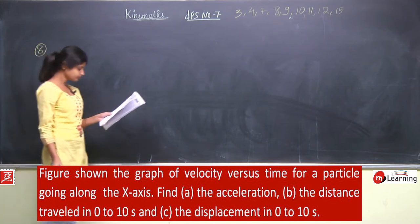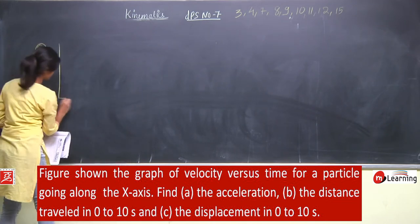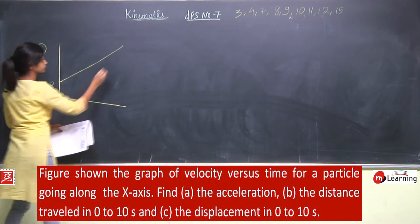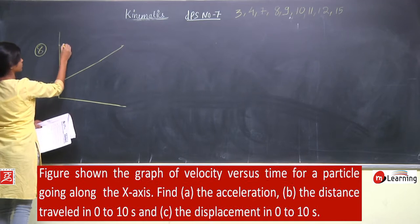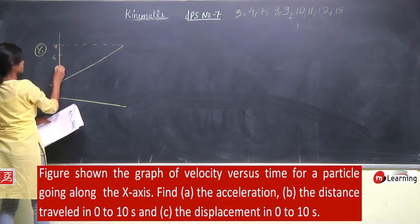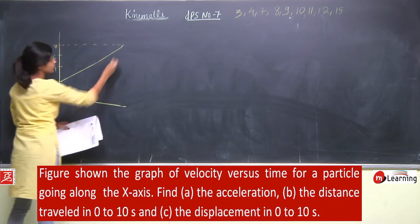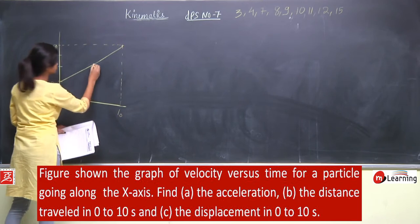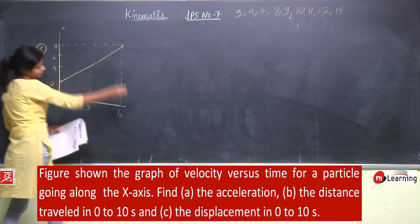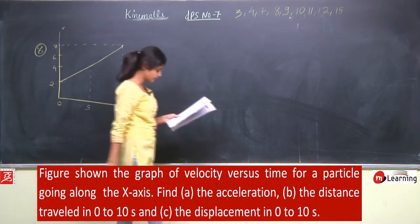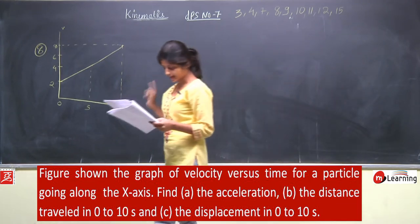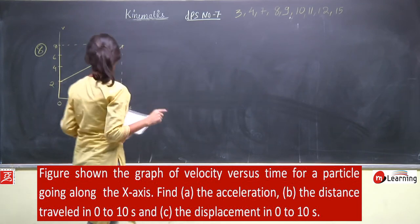Next is question number 8. This is a velocity versus time graph. The figure shows the graph of the velocity versus time for a particle going along the x-axis. Find: (a) the acceleration, (b) the distance travelled and the displacement from 0 to 10 seconds.